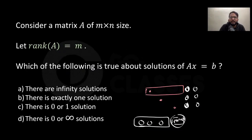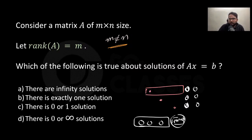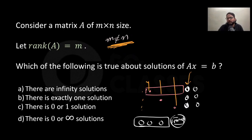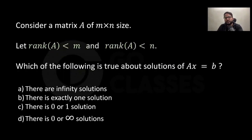There is one additional condition: m is not equal to n. With m≠n, extra columns must exist. If there are three rows, there must be more than three columns, so at least one extra column exists. That extra column is a free variable, which guarantees infinitely many solutions. So the answer is A: infinitely many solutions.